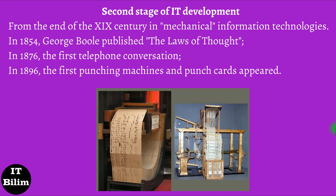The second stage of IT development: Since the end of the 19th century, mechanical information technologies. Tools: typewriter, telephone, phonograph. At the end of the 19th century, the effect of electricity was discovered. After that, the telegraph, telephone, and radio were invented, making it possible to quickly transfer and accumulate information in any volume. In 1854, English mathematician George Boole published The Laws of Thought, a tool for developing complex circuits in modern computers. In 1876, the first telephone conversations over telegraph wires took place. In 1896, the first production of computer punchers and punch cards began.